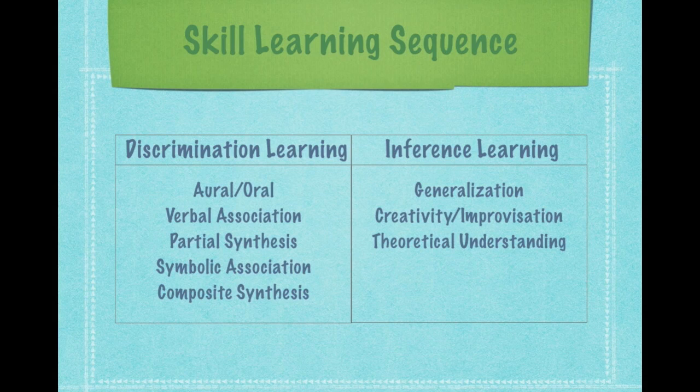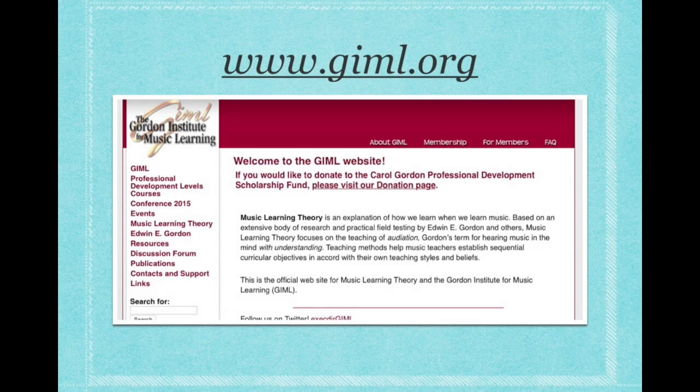Gordon expanded upon this idea of sequential learning to create his skill learning sequence, which outlines two different types of learning and a variety of skill levels within each. You can learn more about this by reading his book, Learning Sequences in Music, or by visiting the website of the Gordon Institute for Music Learning at www.giml.org.